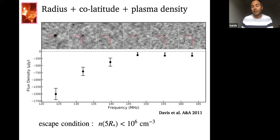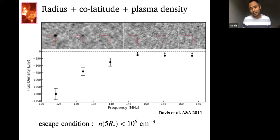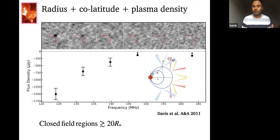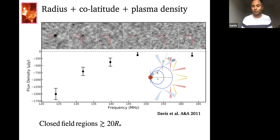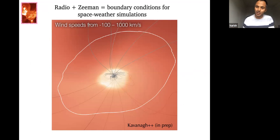We see the same spectrum every time we observe this star — the spectrum tells us something about where in the corona the emission comes from. We can show the radio emission originates at a distance of five stellar radii. This star's corona is unlike the sun's — the sun can't confine plasma at five solar radii, where field lines are open. In this star, the closed magnetic field region extends to about 10–20 stellar radii. We can already say a lot about the coronal structure from modeling the radio emission geometry.